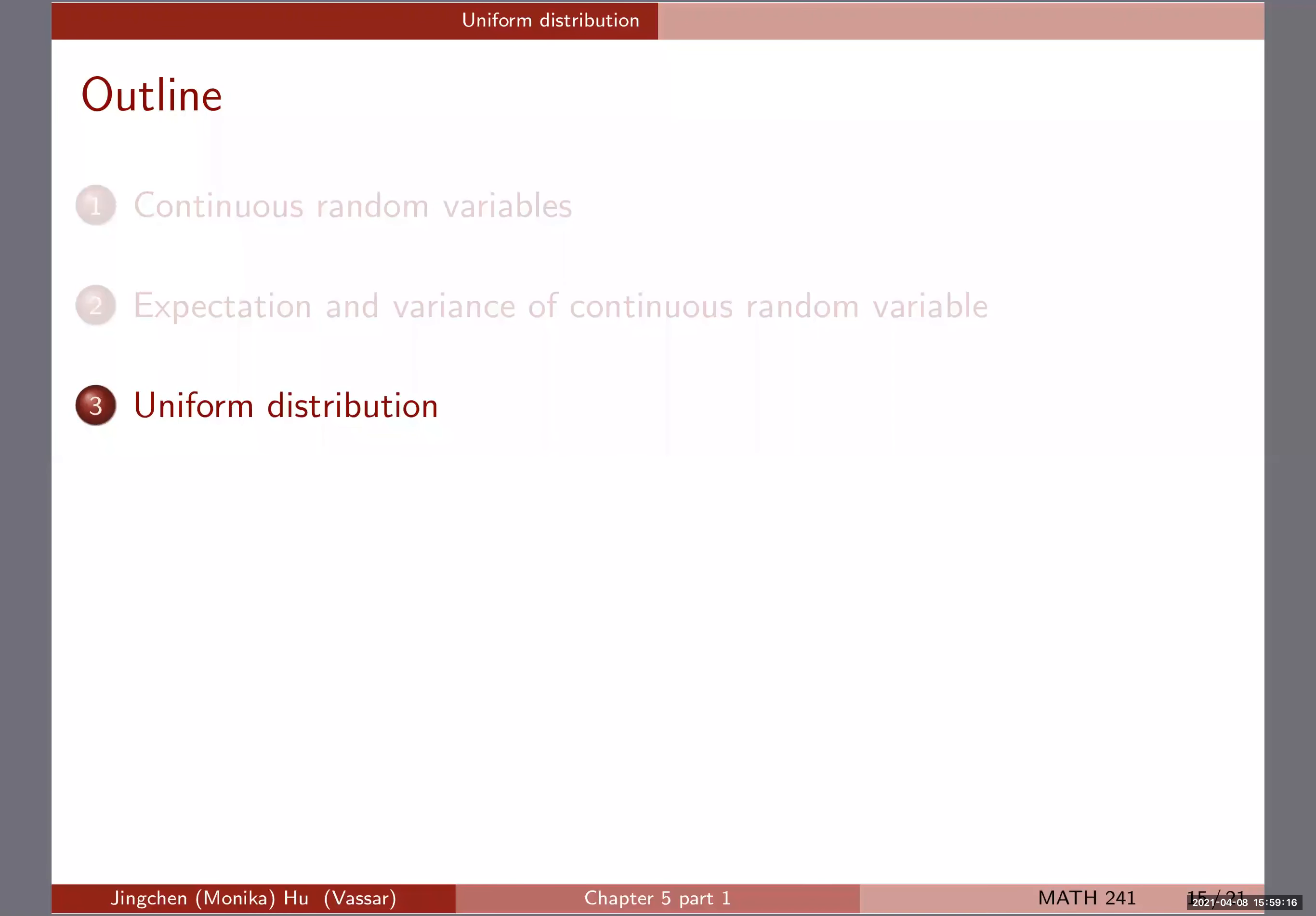So now we're ready to talk about the first continuous random distribution that we're going to cover. It's called the uniform distribution. You probably heard about this or still remember because we mentioned this briefly at the beginning, the first lecture of the semester, thinking about the uniform distribution, especially like the sum of two uniform distributions between 0 and 1, if you remember that. So now we are formally going to define this.